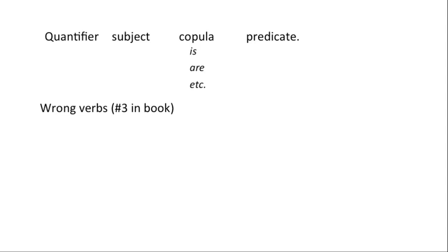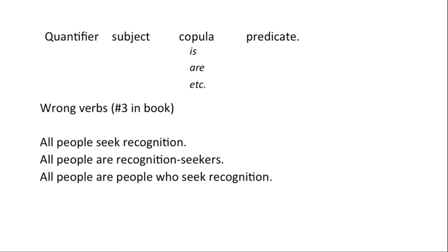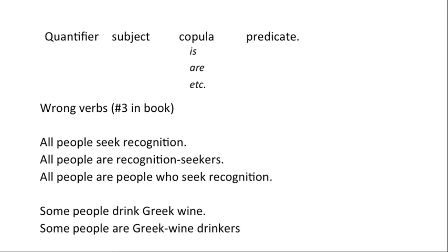The next thing — number three in the book — is wrong verbs. Instead of the copula 'is' or 'are,' we have something else. An example: 'all people seek recognition.' We've got 'all,' 'people,' and 'recognition,' which are all the right kind of thing, but 'seek' is supposed to be 'is' or 'are.' We're going to say 'all people are something' and move the verb 'seek' into the predicate: 'all people are recognition seekers,' or 'all people are people who seek recognition.' Here's another example: 'some people drink Greek wine' becomes 'some people are Greek wine drinkers.' These two are pretty straightforward — know how to do those.